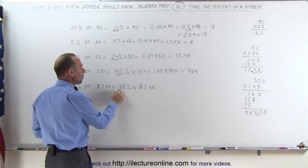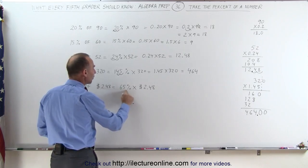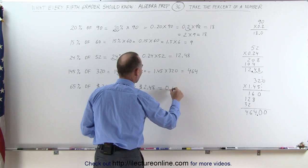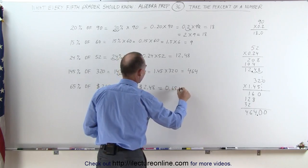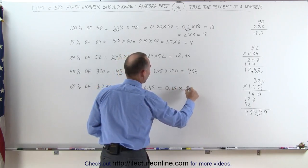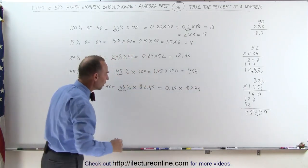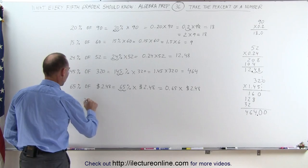This means we're going to make that into a decimal by moving the decimal place over two spots. This is equal to 0.65 times $2.48. Let's go ahead and do the multiplication. I'll do it right over here: 2.48 times 0.65.